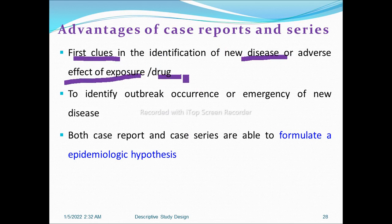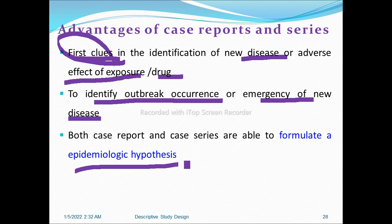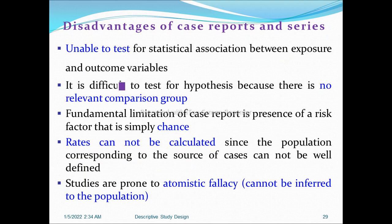Advantages of case reporting and case series: they are first clues in the identification of new disease or adverse effects of exposure or drugs. They are important for identifying outbreak occurrences and the emergence of new diseases. When one case happens in the community, a case report is written; when two or three cases occur, a case series follows. Both case report and case series are important for generating epidemiological hypotheses, which are then tested by analytic studies.